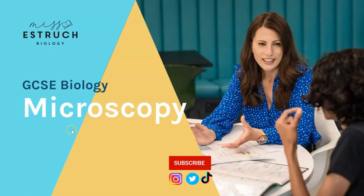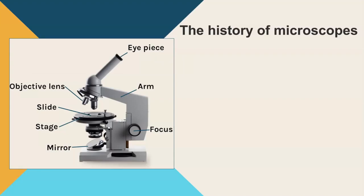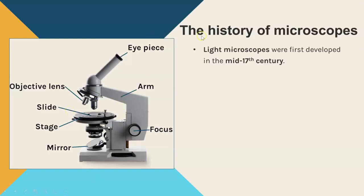In this video we're going to be covering a GCSE topic on microscopes. We'll look at how microscopy techniques have developed over time, how electron microscopy has increased our understanding of the internal structures of a cell, and what we mean by magnification and resolution and how those differ between light and electron microscopes. You do need to know a little about the history of the microscope, and you could be asked to label the different parts because using a microscope is one of your required practicals. Light microscopes were first developed in the mid 17th century.